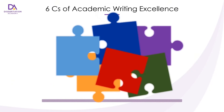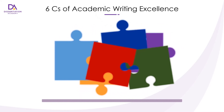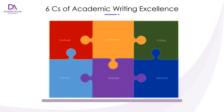I invite you to watch the video, maybe even more than once, so that you can fully understand the scope of each C. The six C's are like a jigsaw puzzle. They are confined, corroborated, critical, coherent, concise, and captivating. When you put these individual pieces together, you will have formed a clear picture of your research.